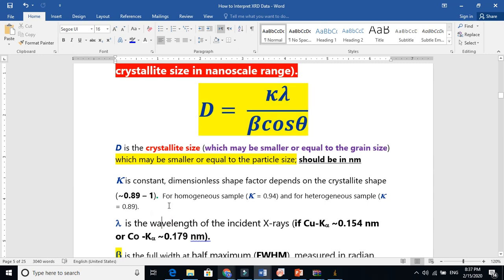This lambda is basically the wavelength of the X-ray. If you use copper K-alpha, the most intense line of the characteristic X-ray, this is the value. And if you use cobalt K-alpha, this is the value of that.